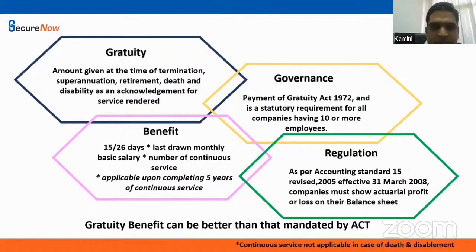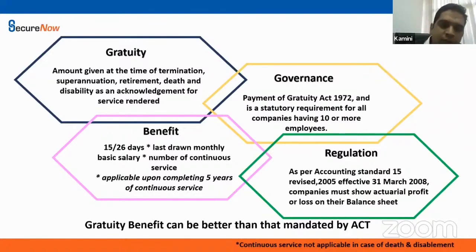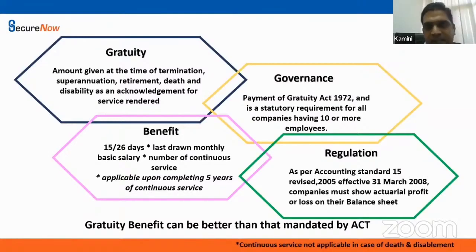Coming on to the basics of Gratuity — I'm sure everybody would be aware that Gratuity is payable after completion of 5 years of continuous service. The formula remains 15/26 × last drawn basic salary × number of completed years of service. Why 15? It is basically the half-month salary, and 26 is excluding 4 Sundays — when we minus 4 Sundays from 30, it makes 26.